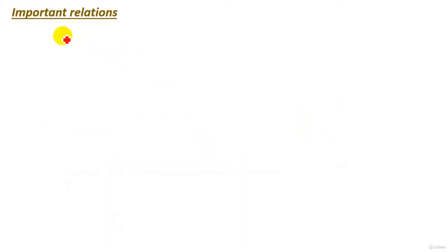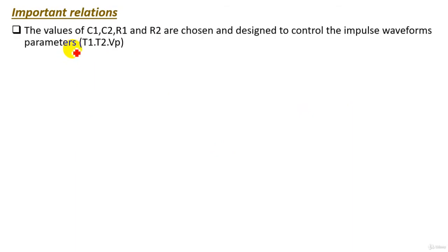Now let's see important relations of our circuit. First, you should know that the values of the capacitors C1 and C2, charging capacitor and load capacitance, and the values of R1 and R2, the damping resistance and discharging resistance, are chosen carefully and designed to control the impulse waveform parameters, which are T1, T2, and the peak voltage.